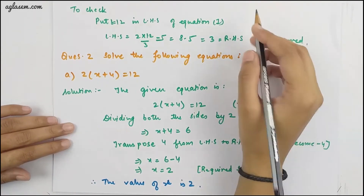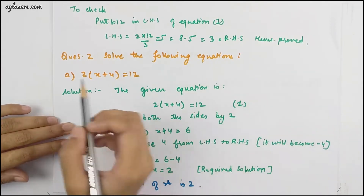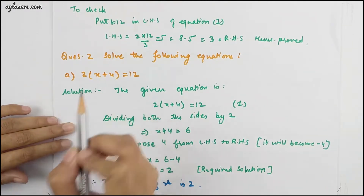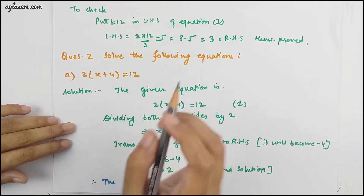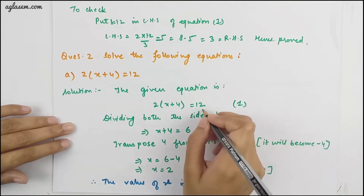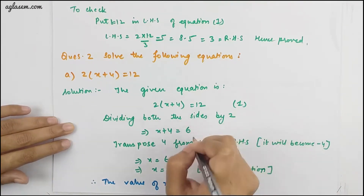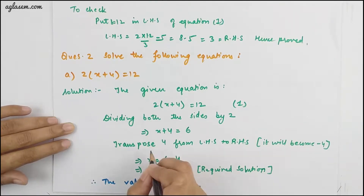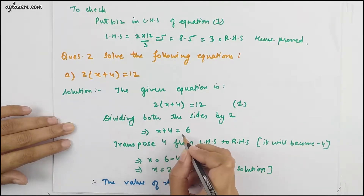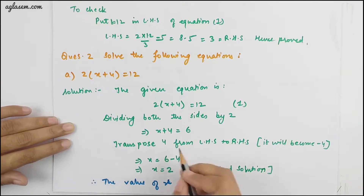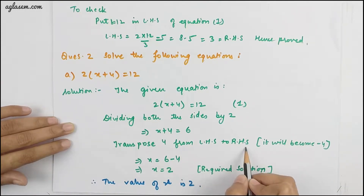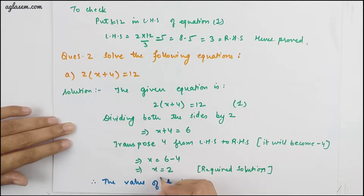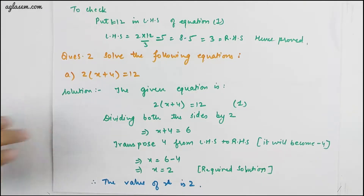Our next question: solve the following equations. The first part is 2x + 4 = 12. Dividing both sides by 2, we get x + 4 = 6. Transposing 4 from LHS to RHS, it becomes −4. From there, x = 2. Therefore the value of x is 2.